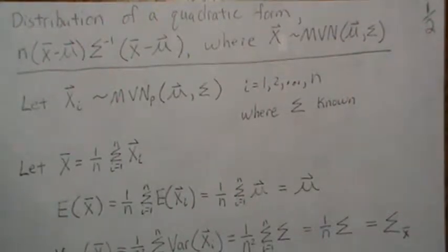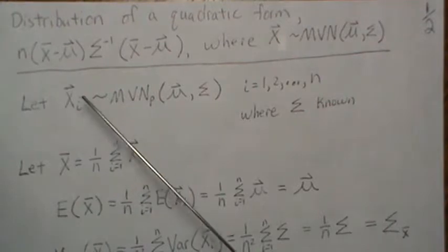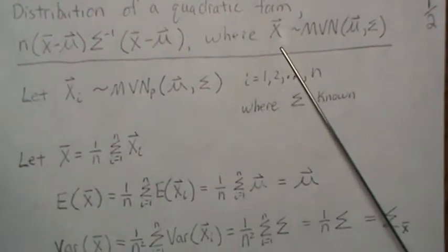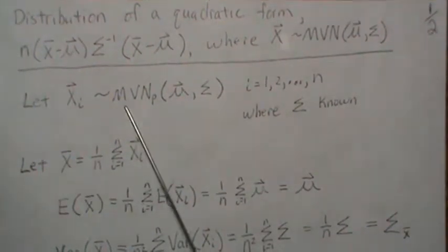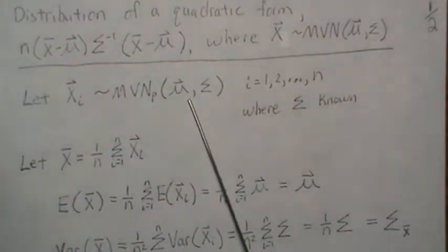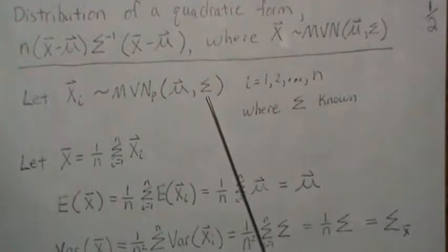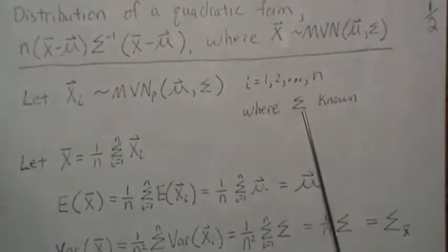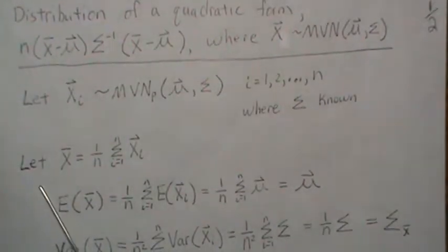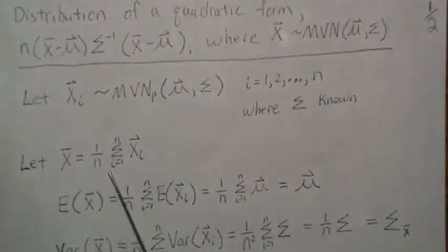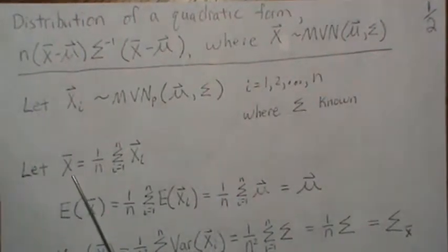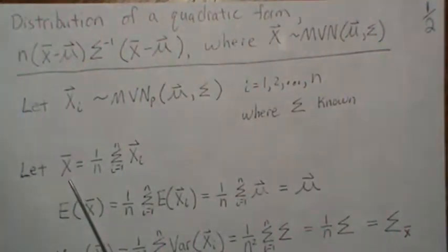In this video we're going to find the distribution of a quadratic form where x is a multivariate normal random variable. Let xi be multivariate normal with dimensions p, mean vector mu, and variance-covariance matrix sigma. i goes from 1 to n, and for this video we're going to assume that we know the variance-covariance matrix. Let x bar equal the sum of these vectors divided by n, so it's a sample mean. Throughout this whole video, x bar will be a vector.